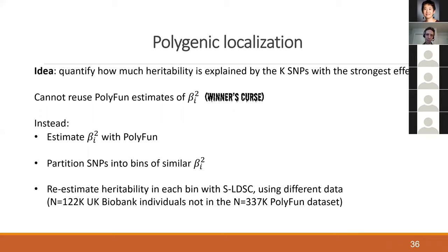Something else we can do with our Bayesian fine mapping framework is called polygenic localization, which ties together fine mapping and heritability partitioning. The idea is to quantify how much heritability is explained by the k SNPs with the strongest effects. Since we estimated the posterior distribution of the effect of each SNP, we know which are strongest, which are second strongest, and so on. This gives a clue about how many SNPs explain a given proportion of heritability, using annotations indirectly through the posterior inference.